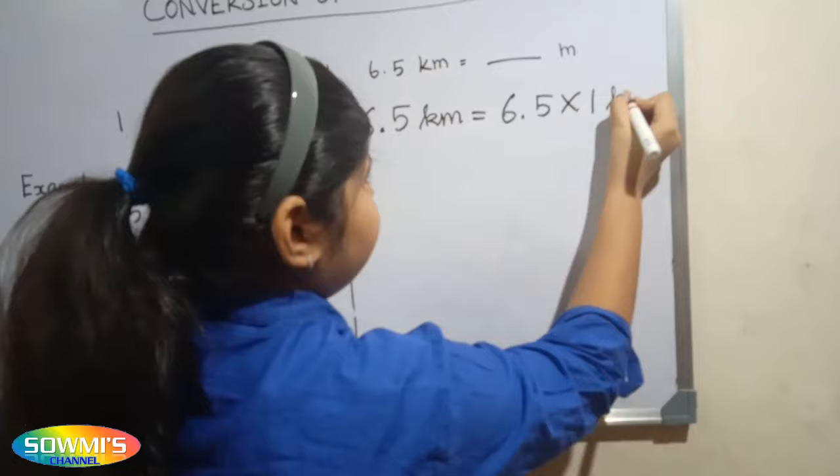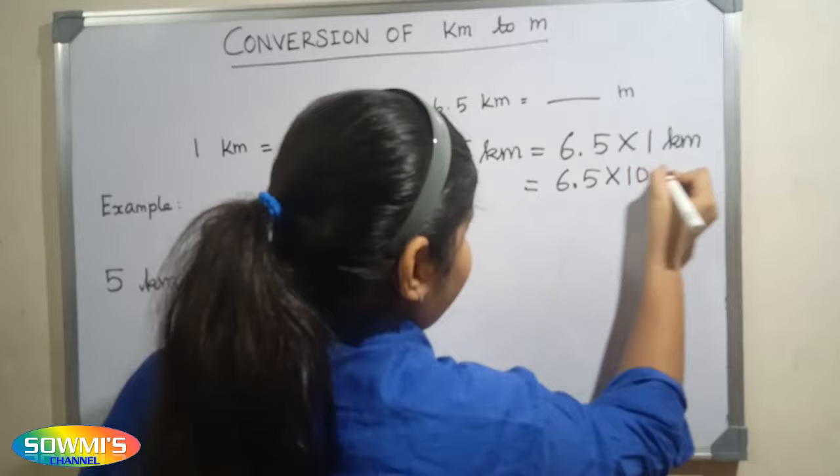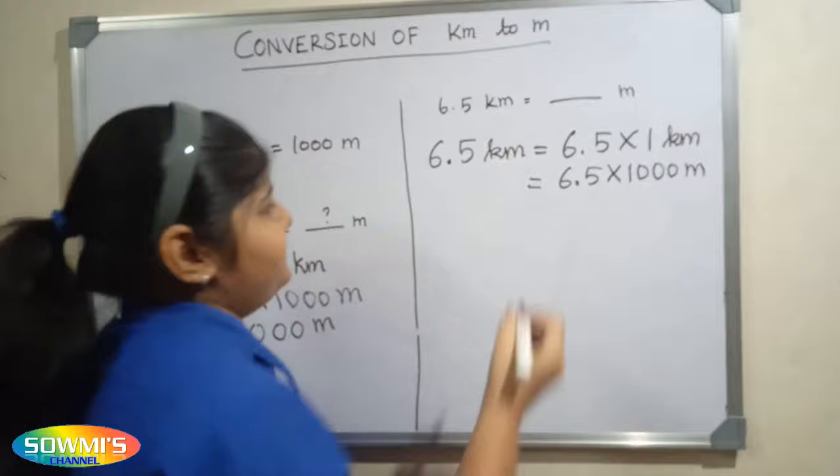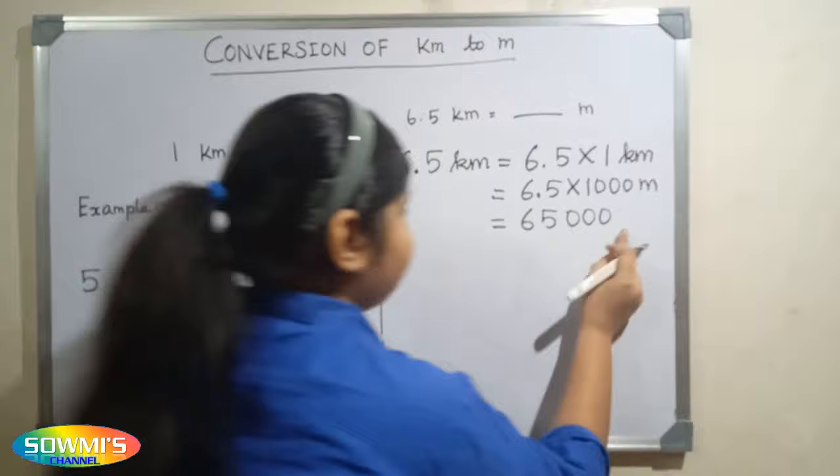Here, 1 kilometer is equal to 1000 meters. So 6.5 multiplied by 1000 meters. Now we have to multiply both numbers. Here there is one number after the decimal point, so we have to mark the decimal point leaving one place from the right.